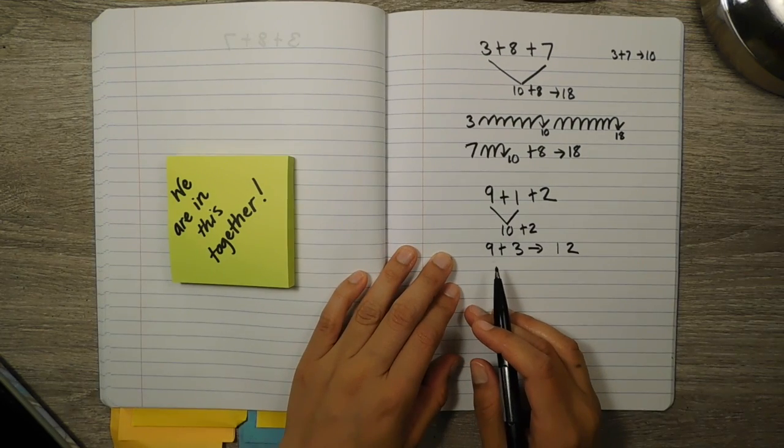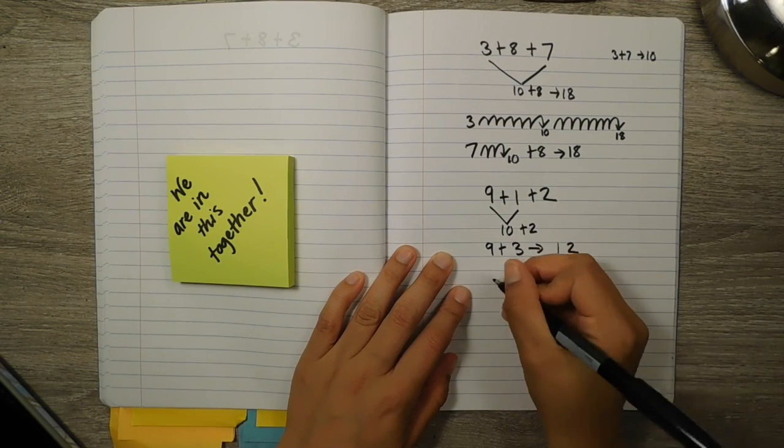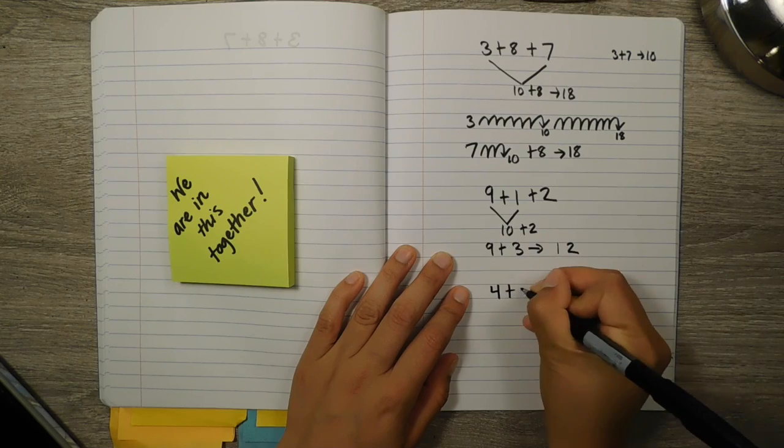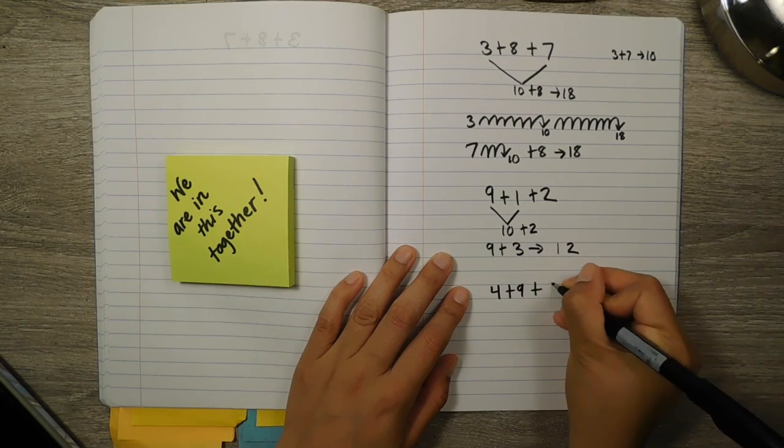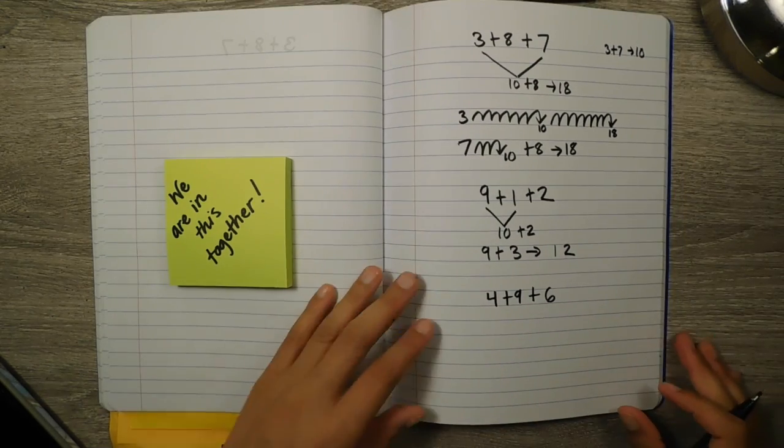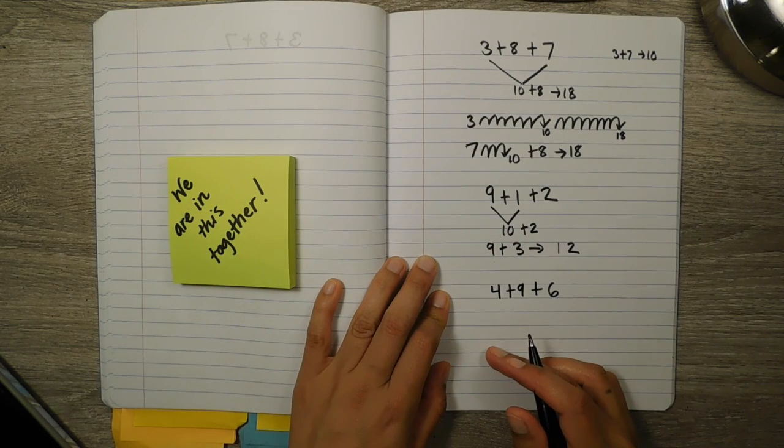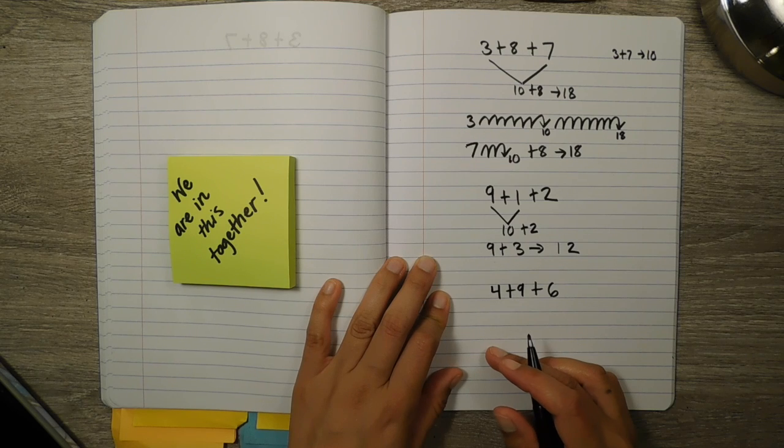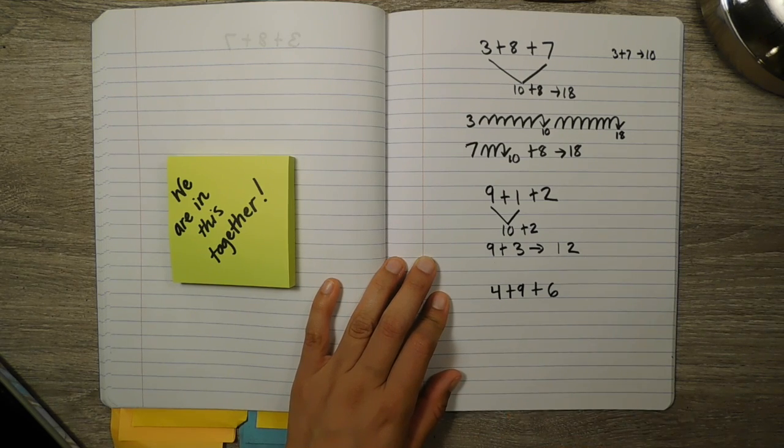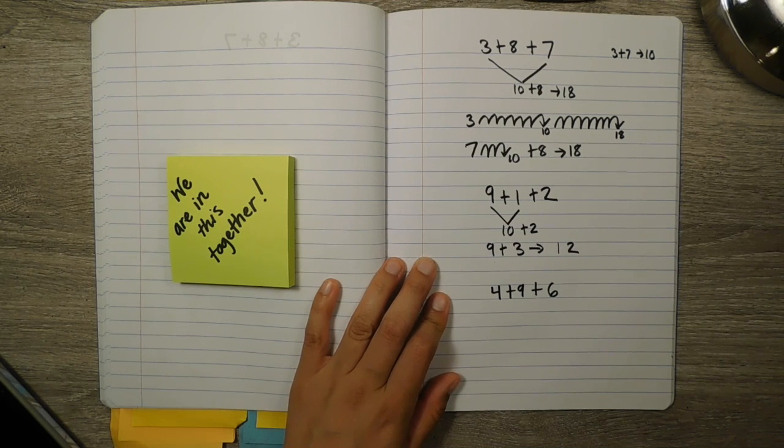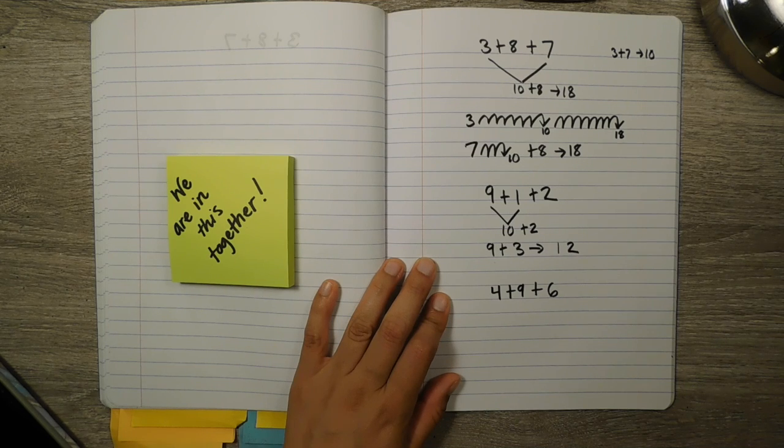So let's do the next number sentence. So think, what did you do to solve this number sentence in your head? How was your strategy for this maybe similar or different? If you can, turn and talk with someone next to you.